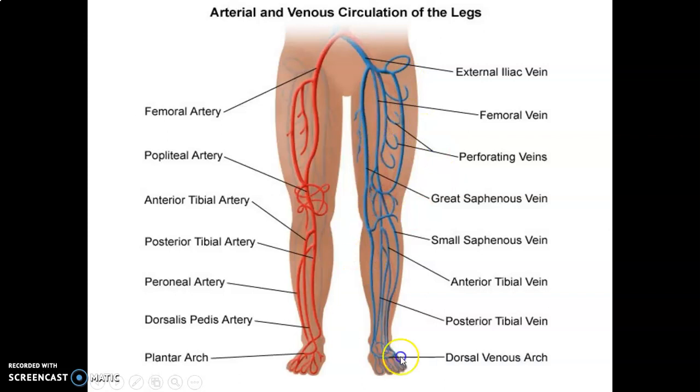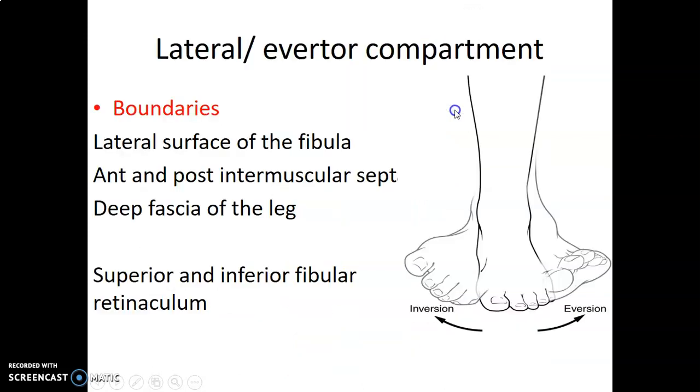At the lower border of the popliteus muscle, the popliteal artery divides into the anterior tibial artery — which supplies the anterior compartment — and the posterior tibial artery — which supplies the posterior compartment. The posterior tibial gives off the peroneal artery, which goes to the lateral compartment. Superficially, you also have the great saphenous and small saphenous veins.